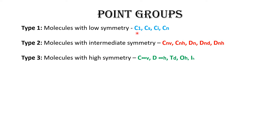Low symmetry includes C1, S, C, I, and N. Intermediate symmetry includes CNV, CNH, DN, DND, and DNH. High symmetry includes C∞V, D∞H, tetrahedral, octahedral, and icosahedral.